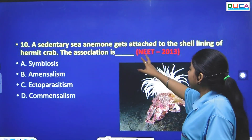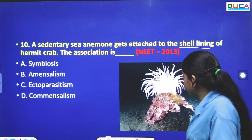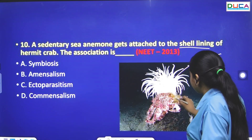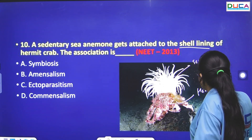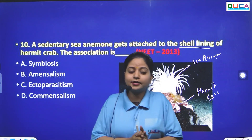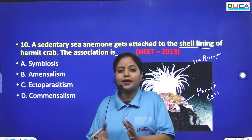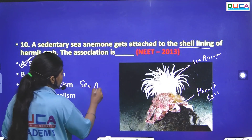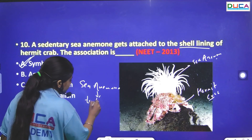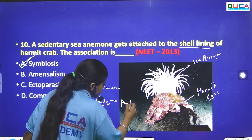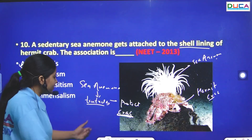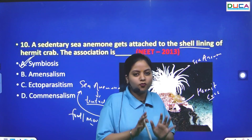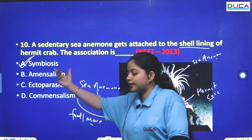The next question: A sedentary sea anemone gets attached to the shell of a hermit crab. What is this association? The sea anemone has tentacles and uses them to protect the crab, while the crab provides food and locomotion for the sea anemone. Both are benefited, so this is an example of symbiosis or mutualism.